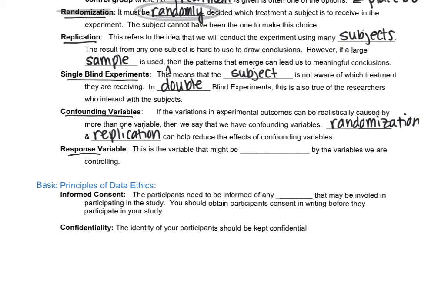A few more words. Because the response variable is the variable, this is the variable that might be affected by the variables we are controlling. So it's kind of like the output. So the variables we're controlling are like the medicine and the responses. Are they cured of COVID? Are they sleeping better? So the response variable is almost like an output if you want to relate it to an algebra class.